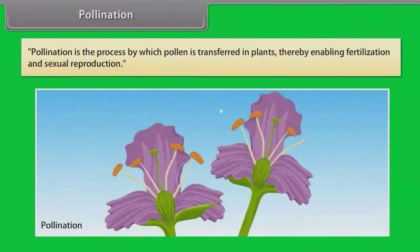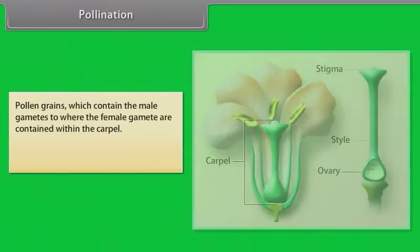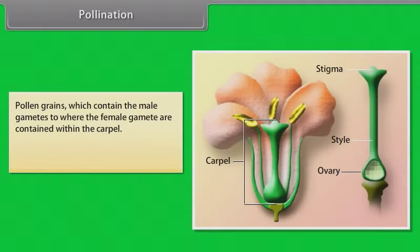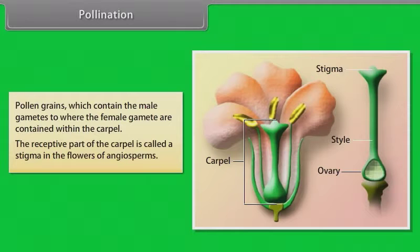Pollination is the process by which pollen is transferred in plants, thereby enabling fertilization and sexual reproduction. Pollen grains, which contain the male gametes, are transferred to where the female gametes are contained within the carpel. The receptive part of the carpel is called a stigma in the flowers of angiosperms.